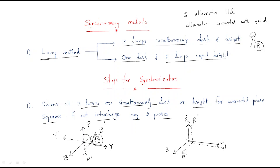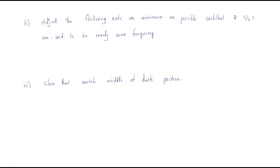If these are in parallel connection, then synchronization will be done. This is the exact synchronization. The next step: adjust the flickering rate as minimum as possible. When lights are connected for synchronization, some flickering rate is possible due to phase difference between the phases.